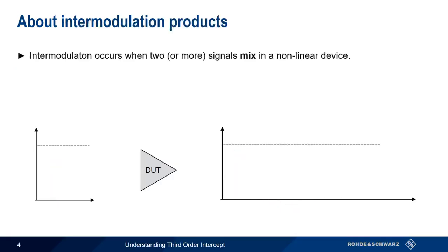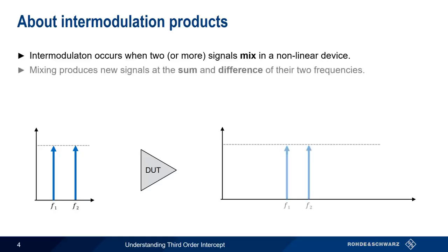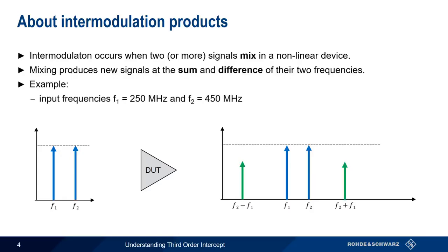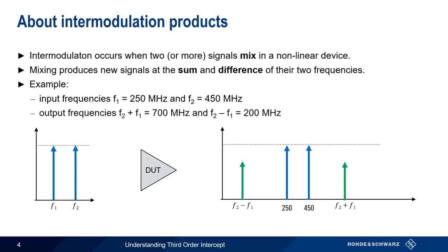Intermodulation products are also generated by mixing in nonlinear devices. Unlike harmonics, which can be created by a single input signal, at least two input signals are needed for the creation of intermodulation products. When these two input signals mix together in a nonlinear device, the output contains products at the sum and difference frequencies. For example, we input two signals or tones into a device, one at 250 MHz and one at 450 MHz. In addition to outputting the two original tones, our mixer will also output tones at the sum and difference frequencies, here 700 MHz and 200 MHz.